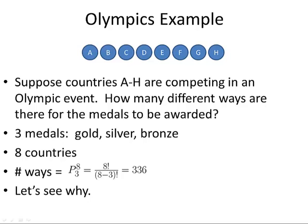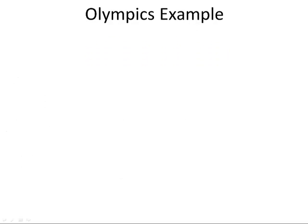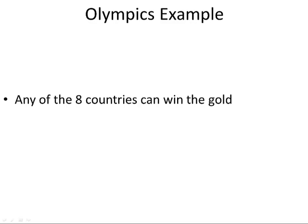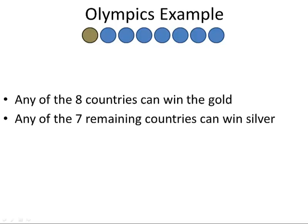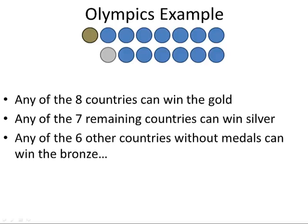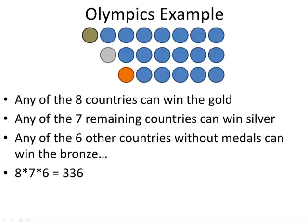Now let's investigate and see why that happens. First of all, any of the eight countries can win the gold — just one of them wins gold, it could be any country. After that country wins the gold, any of the seven remaining countries could win the silver. After that country wins the silver, there are six countries left, and one of them can earn the bronze. So the number of different ways to make groups of gold, silver, and bronze winners is eight times seven times six, which equals 336.